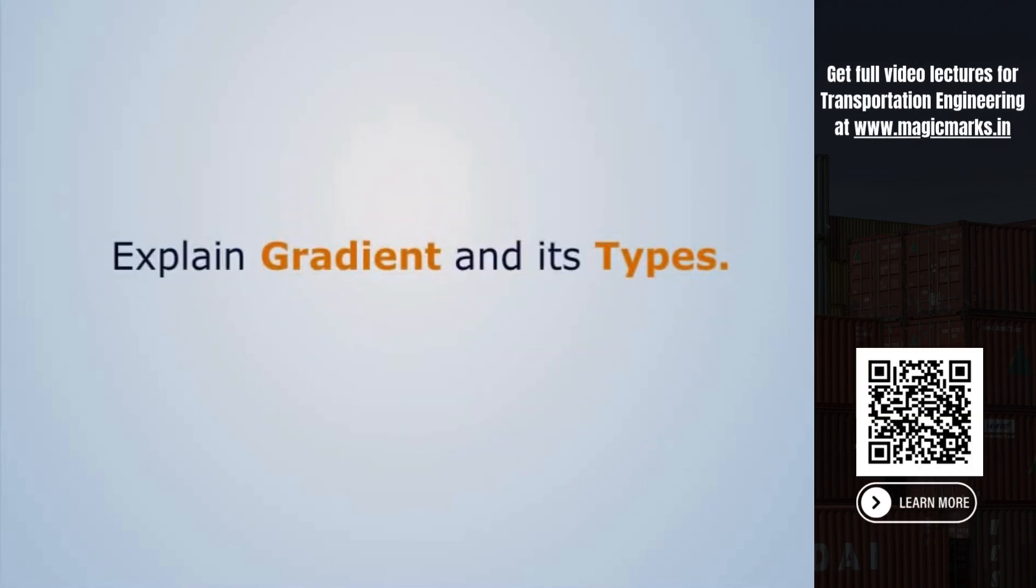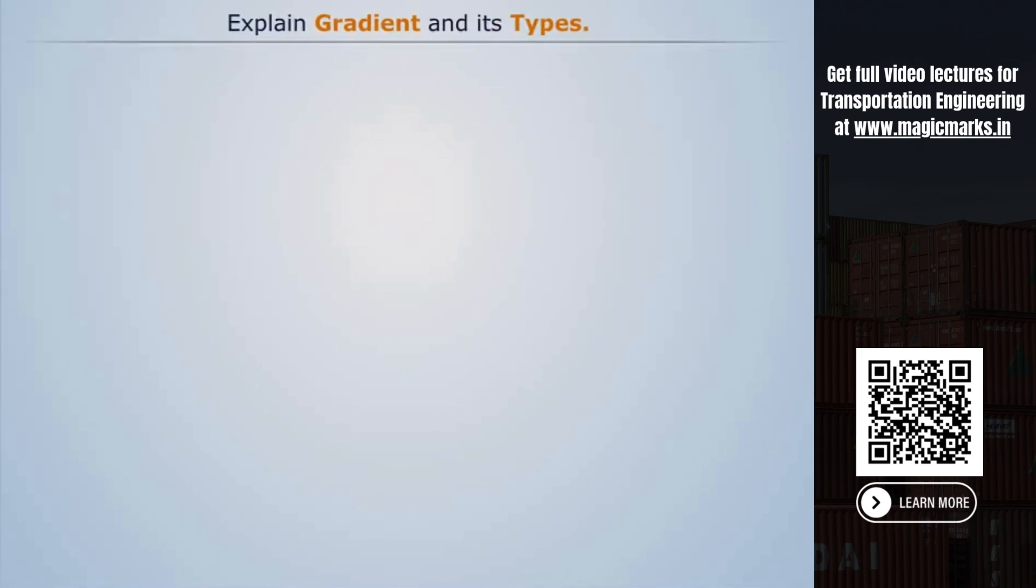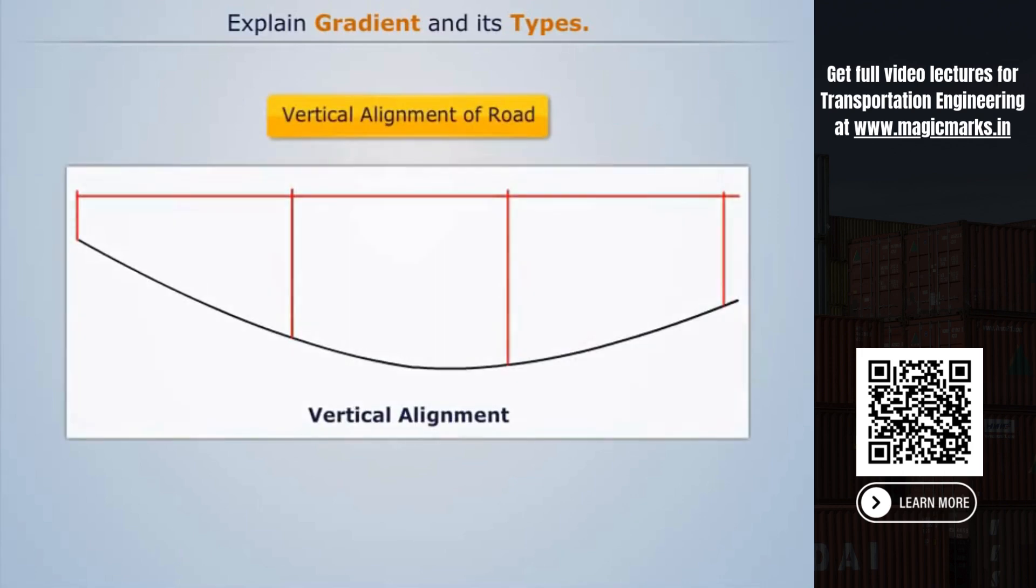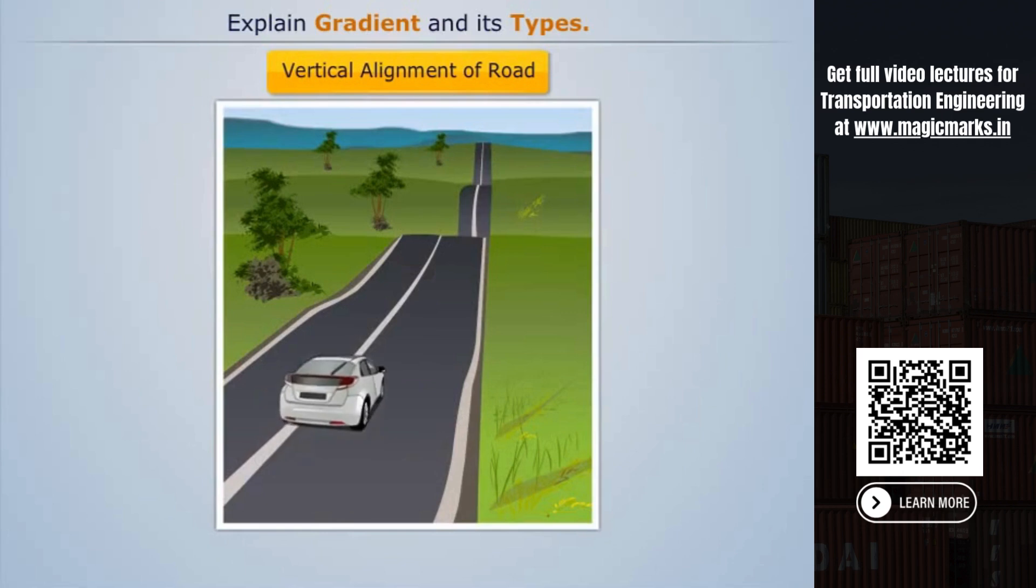Explain gradient and its types. In the previous sections, we have studied the horizontal alignment of road which guides the turns on the road. Similarly, vertical alignment of road guides the rise or fall in the road, mainly in hilly areas.